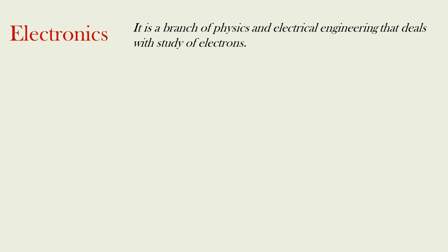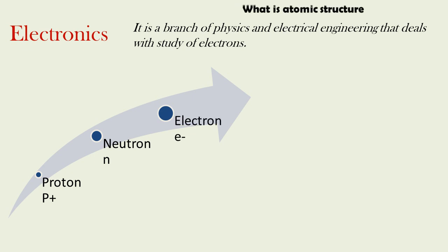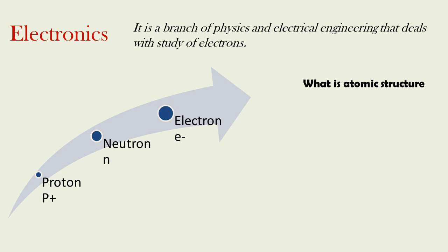As far as atomic theory is concerned, we have three types of energy particles: the proton, which is positively charged; the neutron, which we consider as chargeless; and most importantly the electron, which is negatively charged.